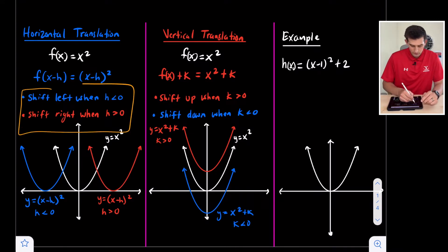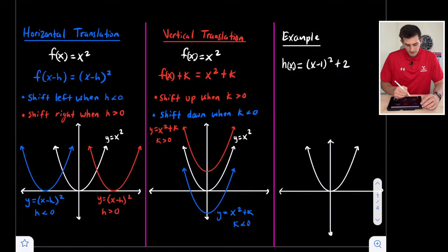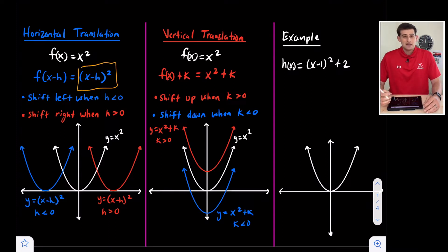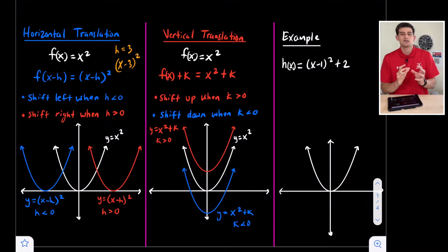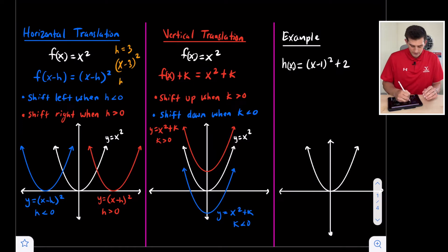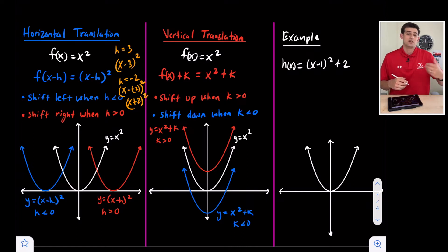We shift left when h is less than zero, and right when h is positive — but be careful, because the equation has x minus h. If h equals three, the equation looks like x minus three squared, which means we're shifting to the right. If h is negative two, then it looks like x minus negative two squared, which becomes x plus two squared. So with horizontal translation, it's opposite of what it looks like: minus a number means going right, plus a number means going left.